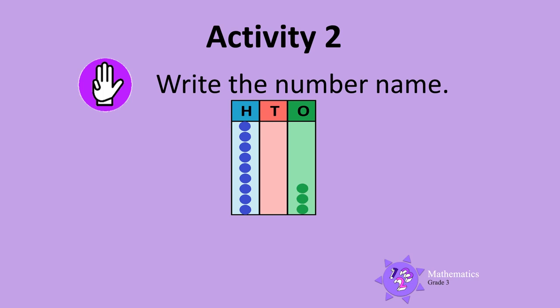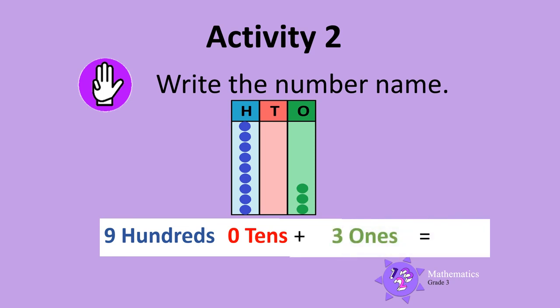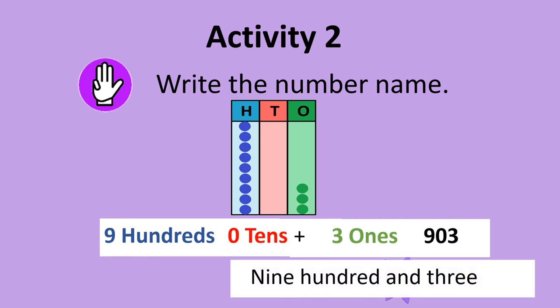What about this one? There are 9 counters in the hundreds column, so there are 9 hundreds. There are 0 counters in the tens column, so there are 0 tens. And there are 3 counters in the ones column, so there are 3 ones. The number shown on the abacus is 903, so we write nine hundred and three.